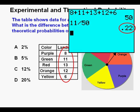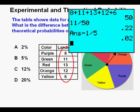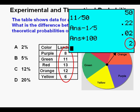Since we have a 1 in 5 chance of spinning green, the theoretical probability is 1 out of 5, so we subtract 1 over 5. We get a difference of 0.02. Since all our answers are in percentages, we multiply by 100 to get 2%. We find 2% and circle our correct answer: A.